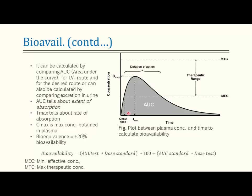Two drugs are considered bioequivalent when the difference in their bioavailability is within ±20%. To calculate bioavailability, compare the AUC of the test drug divided by the AUC of the standard drug, then multiply by the dose ratio (dose of standard drug × AUC of test drug, divided by dose of test drug). The resulting value gives the bioavailability of that particular drug.